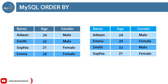If I set ascending order for the name column, after A it returns Emma because E comes before S. If you notice, Smith and Sophia both start with S, but the second character of Smith is M, which comes before O. So it's going to print Smith before Sophia. That's how the table is set in ascending order.